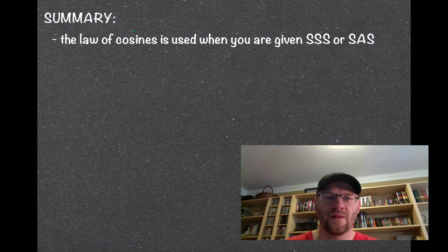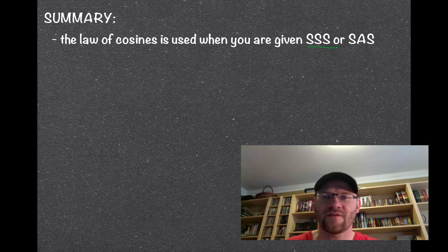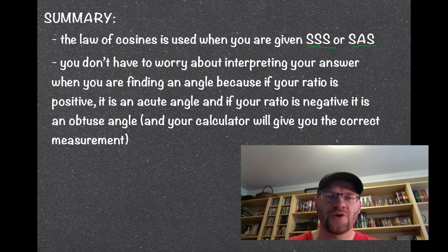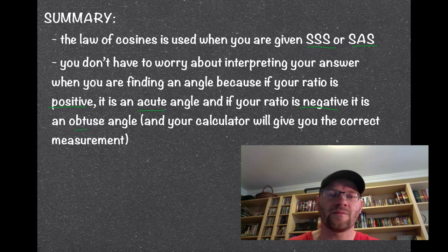So in summary, the law of cosines is used when you're given side, side, side, like three sides, or side, angle, side, so two sides with the angle in between them. And you don't have to worry about interpreting your answer like you did with the law of sines when you were finding an angle, because if your ratio is positive, we know it's an acute angle, so between zero and 90. And if your ratio is negative, then we know that it's an obtuse angle, because that means it's in the second quadrant. And your calculator will always give you the correct measurement, unlike the law of sines where we had to use reference angles.